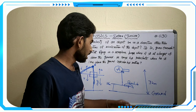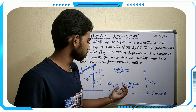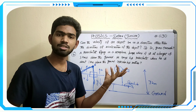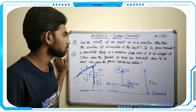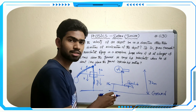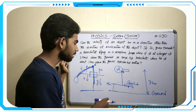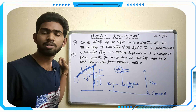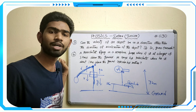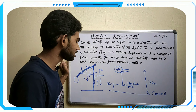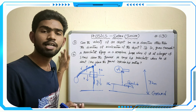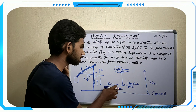Describing his motion: after jumping from the airplane at three kilometers, he is in free-fall motion. The acceleration due to gravity is 9.8 meters per second squared, which is constant. After falling to one kilometer from the ground, he opens the parachute.